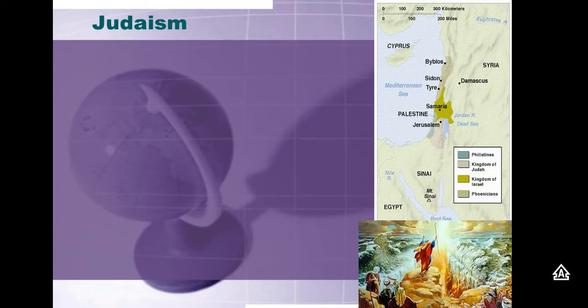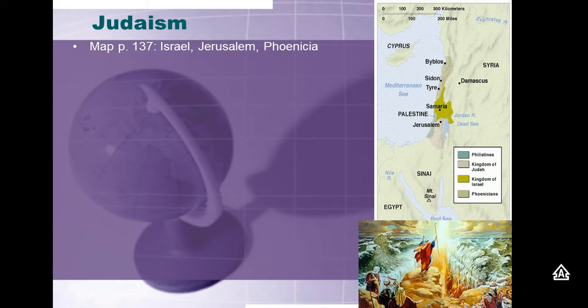Judaism originates and is written down around the same time period as Zoroastrianism, and Jewish people knew Zoroastrians — so there's definitely mutual learning between these two belief systems. For Judaism, take a look at page 137 in your textbook. You'll see a map for the map section of the next test. I want you to know where Israel is located — in ancient Palestine, in the Middle East between Egypt and Mesopotamia. I want you to know where Jerusalem is, near the Dead Sea, and where Phoenicia is located on the map.